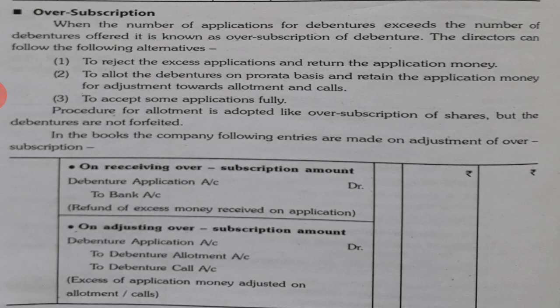Now, Over Subscription. Over Subscription means when the number of applications for debentures is more than the number of debentures offered. This state is known as Over Subscription. For this, we can follow the same process as we do for shares — reject excess applications and the other money can be adjusted automatically at allotment.